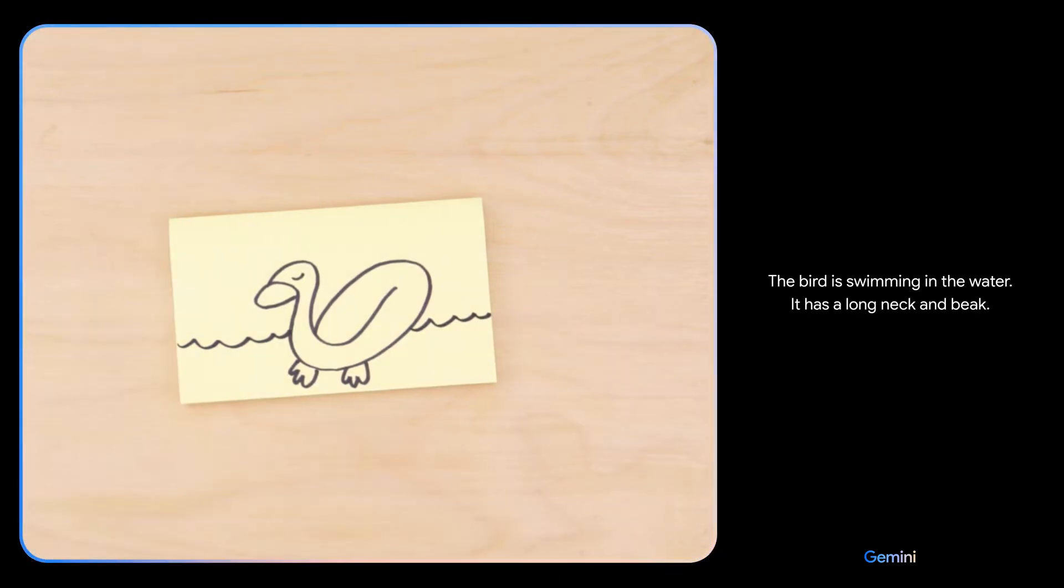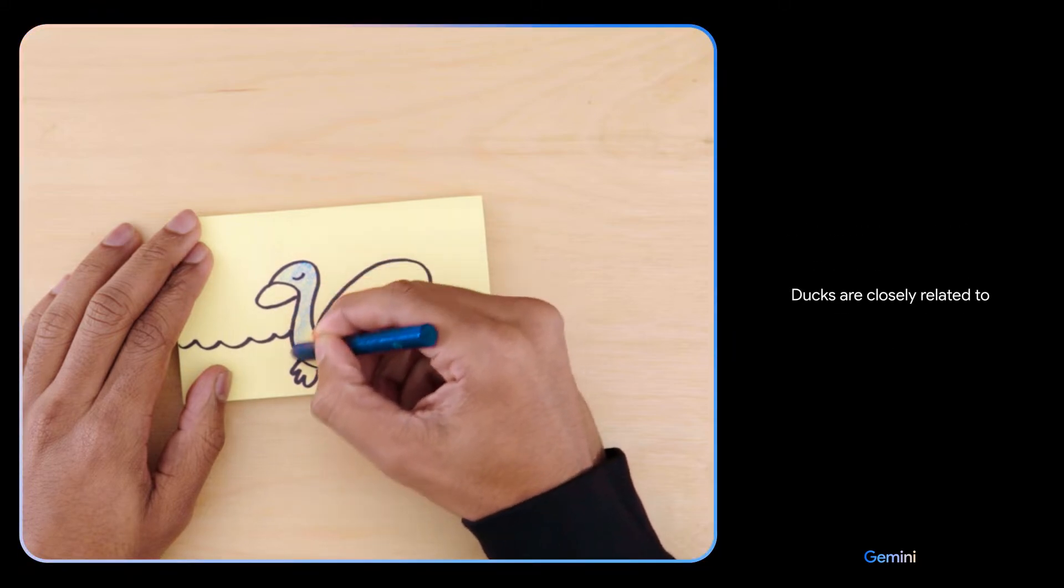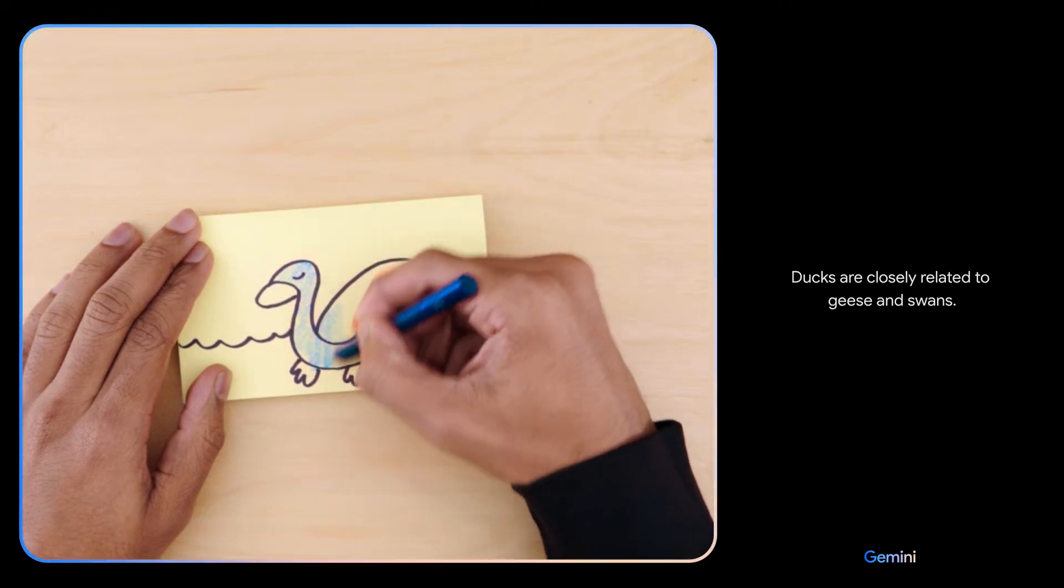What about this? The bird is swimming in the water. It has a long neck and beak. It is a duck. Yes, a duck is a type of waterfowl in the family Anatidae. Ducks are closely related to geese and swans.